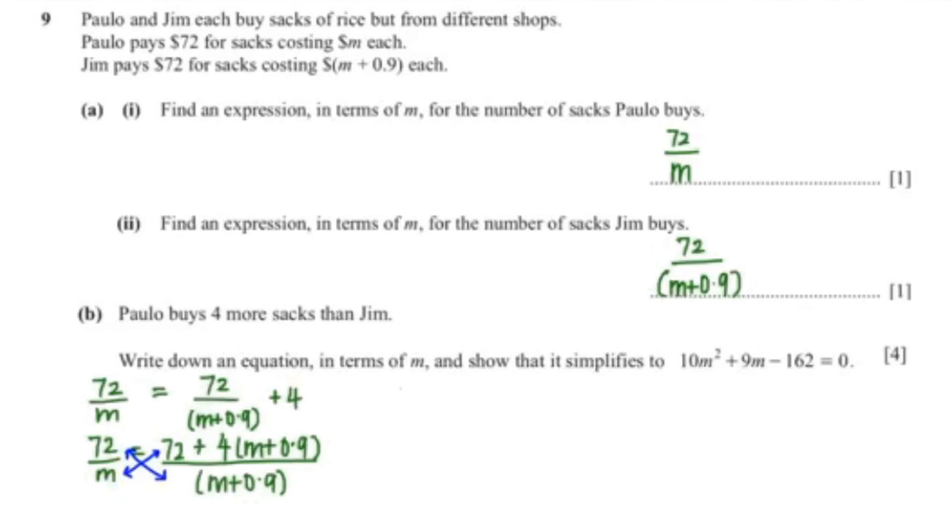So that would be 72 multiply with M plus 0.9 equals to M multiply with 72. And then I'm expanding the bracket. So that's 4M plus 3.6.